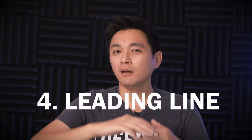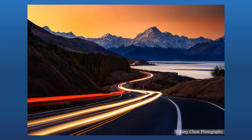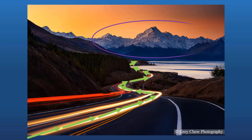Moving to the fourth composition, which is leading lines. By making good use of lines and shapes in similar patterns, you can get your viewer's eyes to move toward your main subject. Like this photo — I used the light trails as the leading lines to bring the viewer from the bottom left of the frame all the way to Mount Cook, which is my main subject. Also notice that I'm following the rule of thirds here, with one third for the sky and two thirds for the ground.